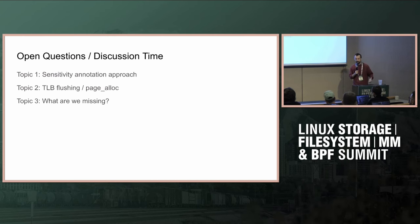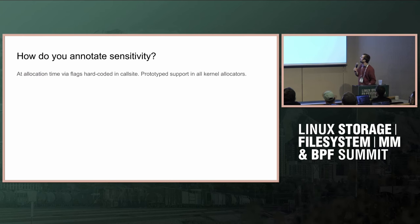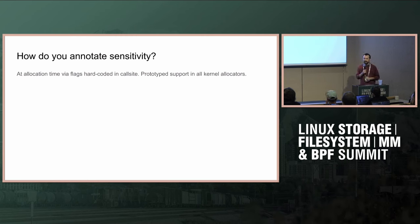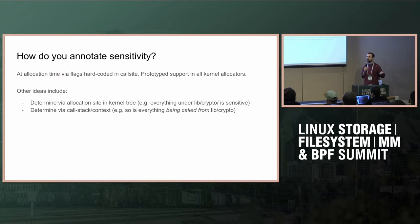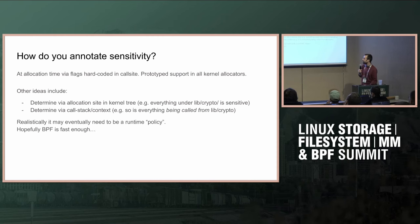Whenever I bring up ASI with anybody, the first question is: how do you decide what's sensitive? The facetious answer is: we set allocation flags. In the prototypes, all the allocators have support for managing sensitive and non-sensitive pages. You could also say any call to an allocator from the crypto library is sensitive because it might have keys. In the really long term, I suspect we're going to want this to be a runtime policy — able to change annotations without rebooting — but that's a long way in the future.